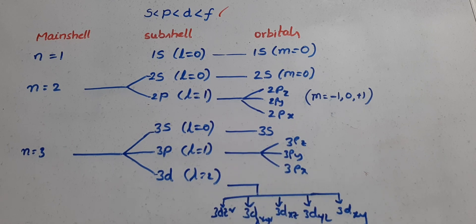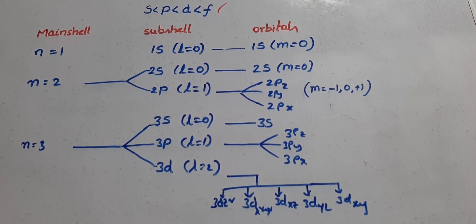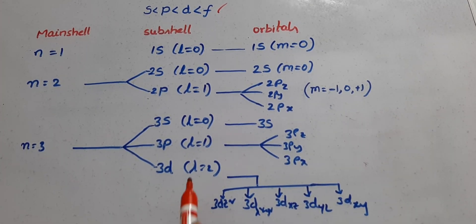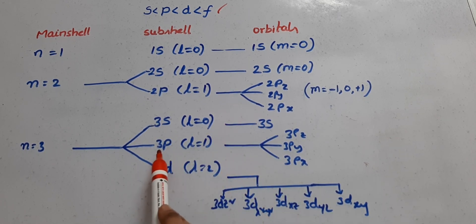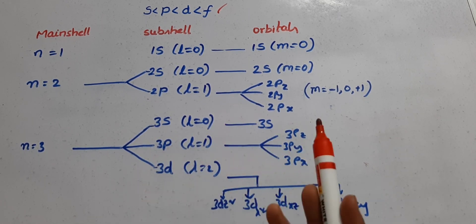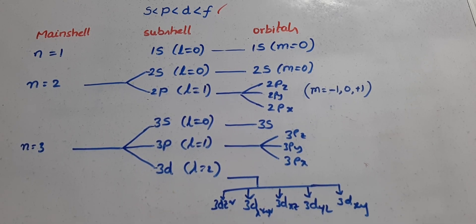For n equals 3: subshells are 3s, 3p, and 3d. For 3d, L equals 2. There are 5 energy states for the d subshell. So 3s, 3p, and 3d have increasing energy within the third shell.